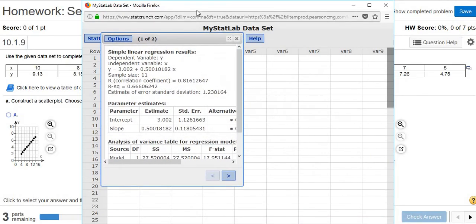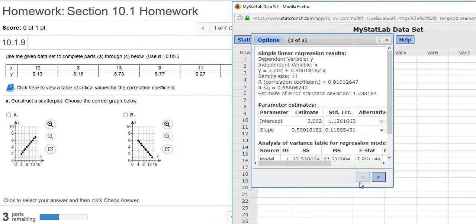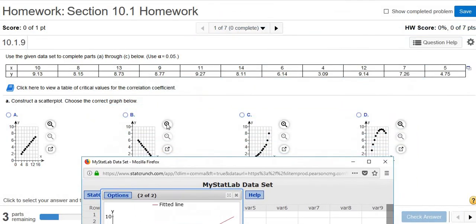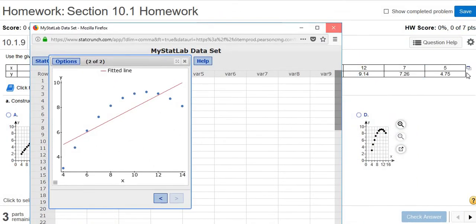So you get all this information here. Where's the scatter plot? Well, if you click this little arrow here, you get the beautiful scatter plot. So that's the scatter plot. Let's see if that's one of the choices. Yep, it sure is.